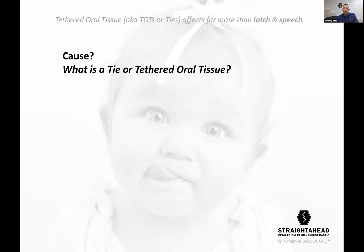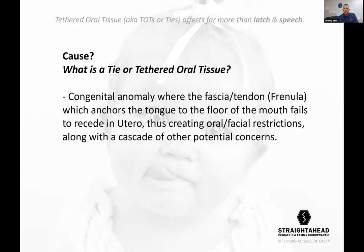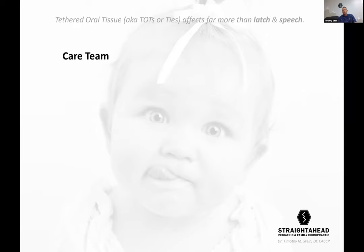To summarize: a tethered oral tissue is a congenital anomaly where the fascia or tendon anchoring the tongue to the floor of the mouth fails to recede in utero. It then creates an oral facial restriction along with a cascade of other potential concerns — all the concerns we've discussed.